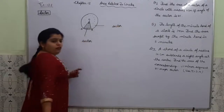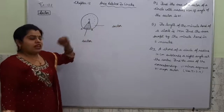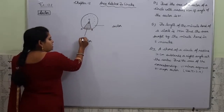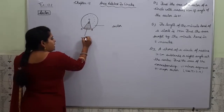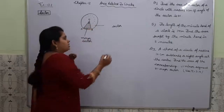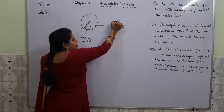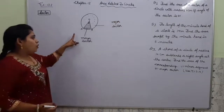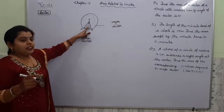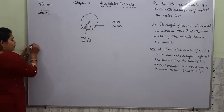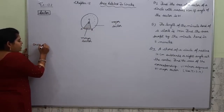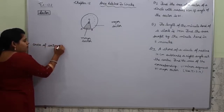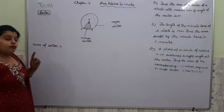Now, how can we differentiate these both sectors? One area is small — it means it is a minor sector — and the other area is large, so it is the major sector. Now we learn here to find the area of this sector. When we talk about the area of a sector, it means we are talking about the area of the minor sector.